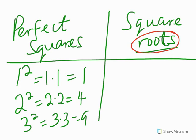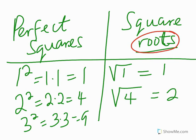Now, when we talk of square roots, it is kind of the inverse — you can see it as an inverse of the squares. For instance, 1 squared is 1, so that means the square root of 1 is 1. 2 squared is 4, so the square root of 4 is 2. 3 squared is 9, so the square root of 9 is 3.